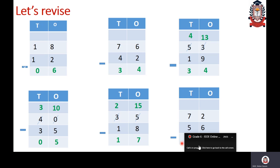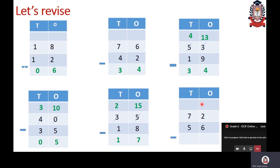Now: 2 minus 6 — cannot take away 6 from 2. Go to tens column and borrow 1 ten. This 7 becomes 6 because out of 7 tens I take away 1 ten, leaving 6 tens. And this 2 becomes 12 because I borrowed 1 ten. So 10 plus 2 becomes 12. 12 minus 6: count backwards — 11, 10, 9, 8, 7, 6. So 12 minus 6 gives 6. Then 6 minus 5 gives 1.